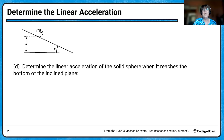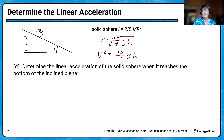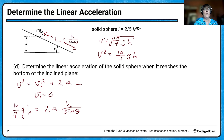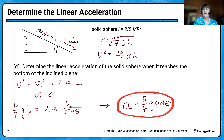Now we're going to determine the linear acceleration of the solid sphere when it reaches the bottom of the inclined plane. I'll square that velocity and use the kinematics equation — where L is the distance down the inclined plane. We weren't given L; we were given H and theta. So L equals H over sine theta. Solving for acceleration, since the solid sphere started at rest, we find the acceleration is five-sevenths G sine theta.